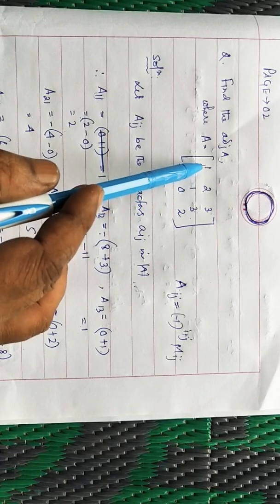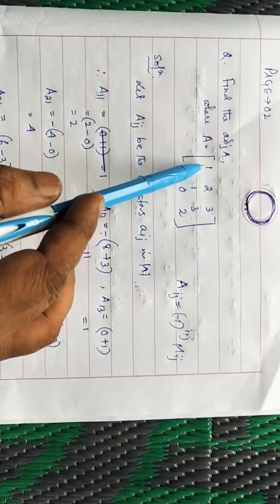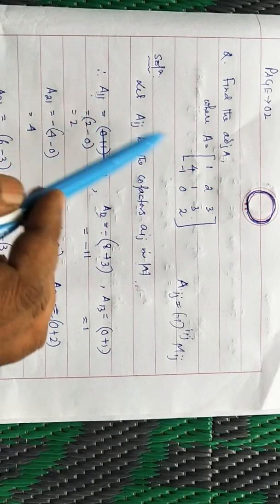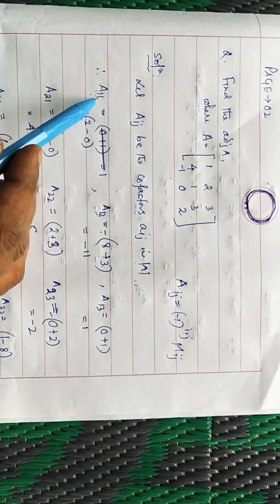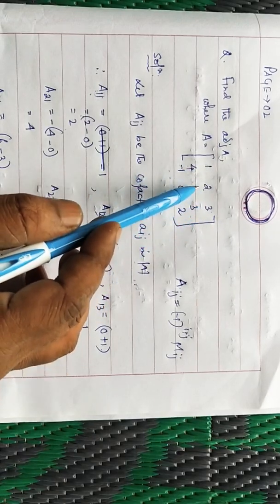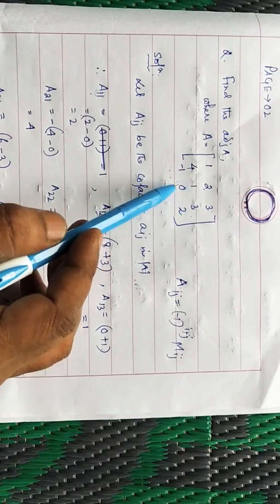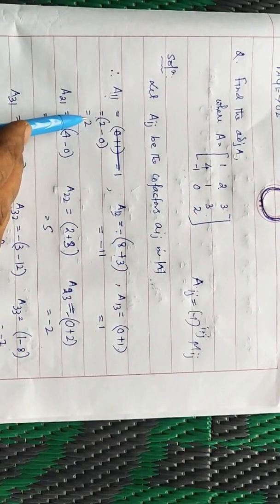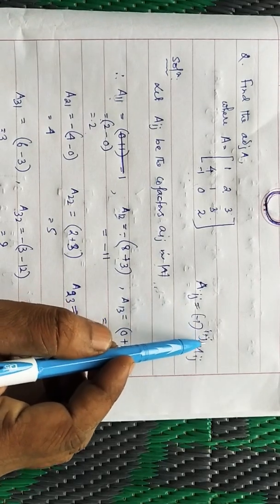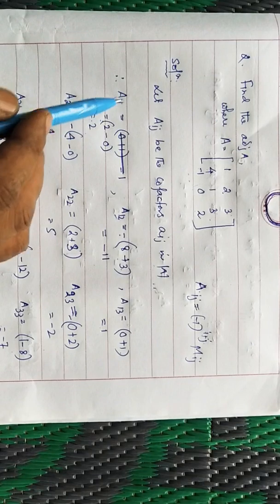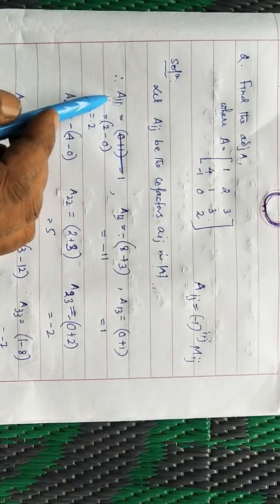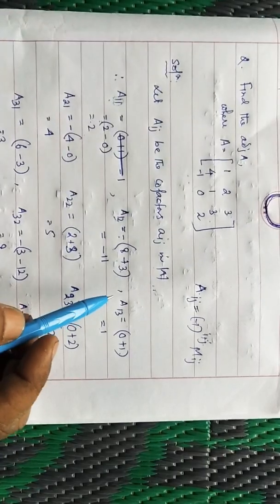Now find the cofactor of each element in the first row. The cofactor of the element 1 (at position a11) is represented by capital A11. To find it, eliminate the row and column where 1 lies, expand the remaining 2×2 submatrix, and apply the sign (−1)^(1+1) = (−1)² = +1, which is positive. If the sum of the suffixes is even, the result is positive; if the sum is odd, the result is negative.